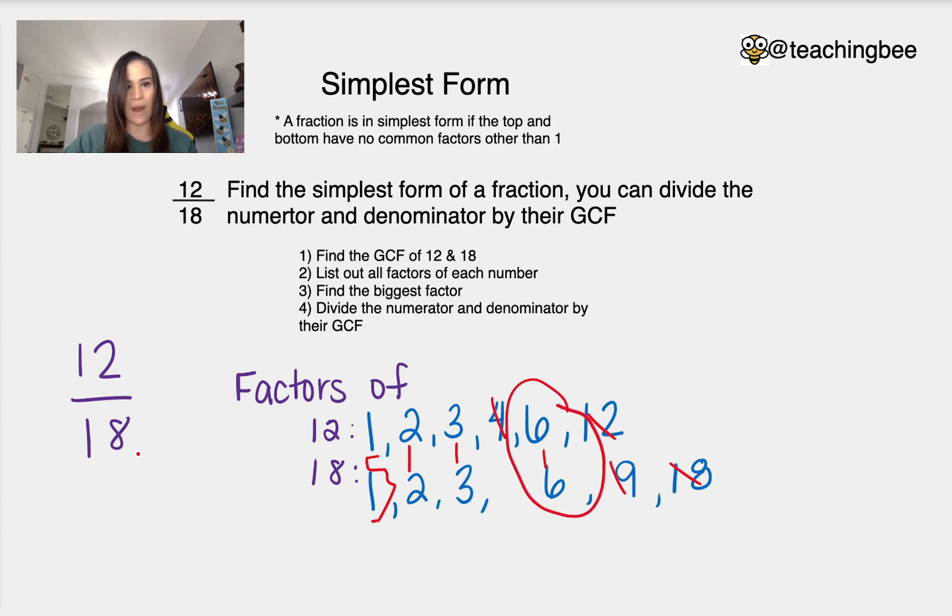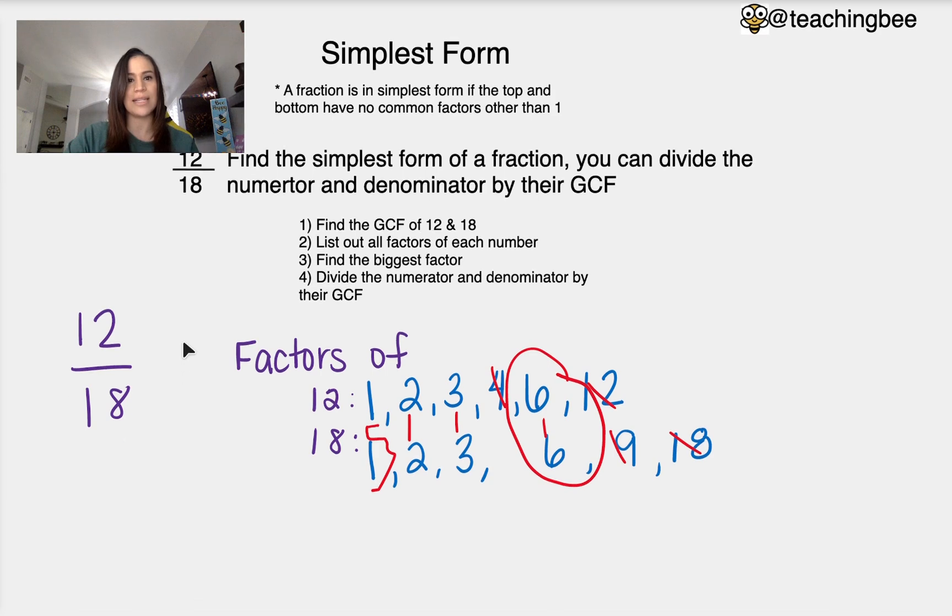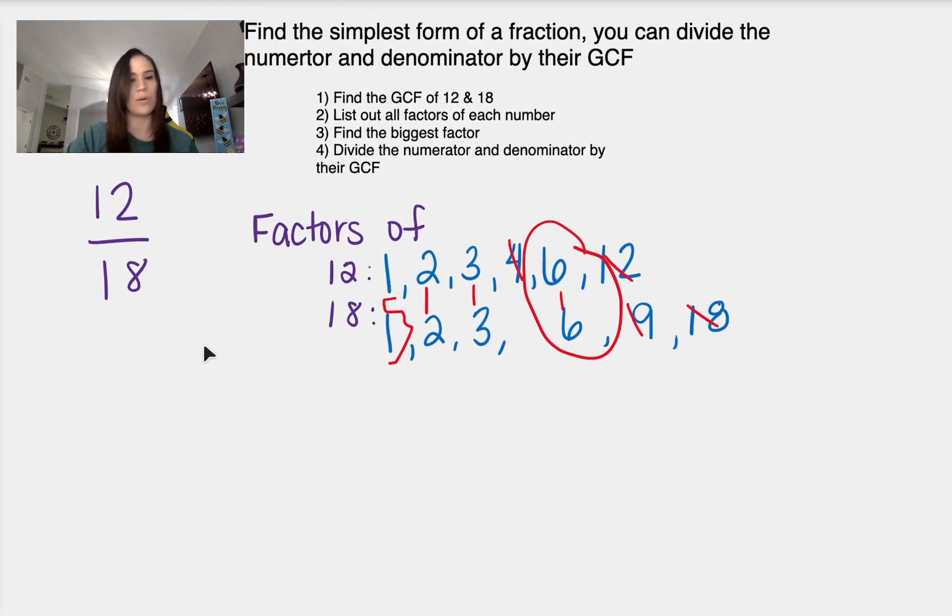So we are going to take our 12 and our 18. Let me just give us a little more room here. So we have our 12 and our 18 and we are going to divide both top and bottom by the same number which is our greatest common factor of 6 and that's going to give us a new answer.